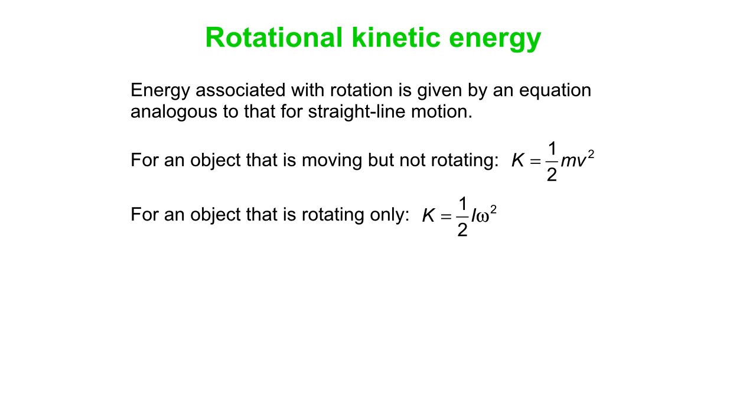We say K is one half times the rotational equivalent of mass. That's the rotational inertia I. And it's not v squared, but it's the rotational equivalent of v squared. That's omega squared. So it's one half the rotational inertia multiplied by the angular speed squared.